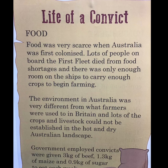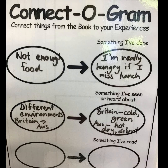The environment in Australia was very different from what farmers were used to in Britain. Britain includes all of the countries in the United Kingdom like England, Scotland, Wales and Ireland. Lots of the crops and livestock could not be established in the hot and dry Australian landscape. I've noted in the graphic organiser that Britain is very cold and green — I've seen that on TV — whereas Australia, where we live, is really hot and dry, with deserts in the middle. They are really different environments.